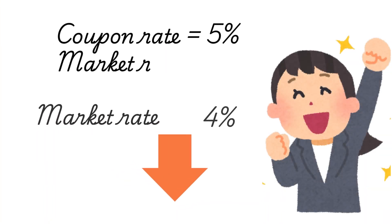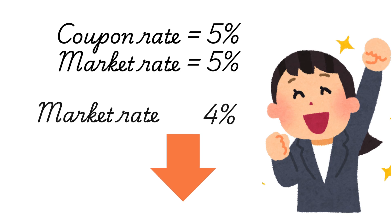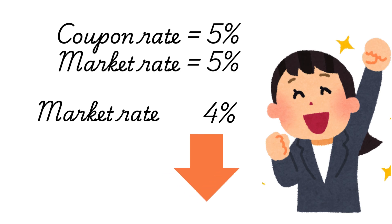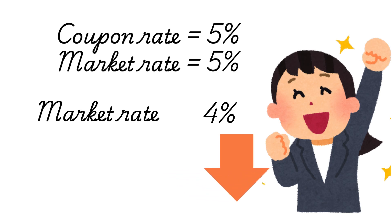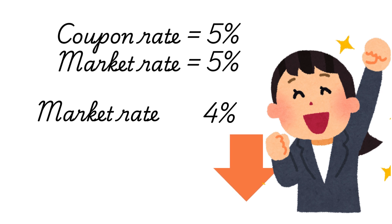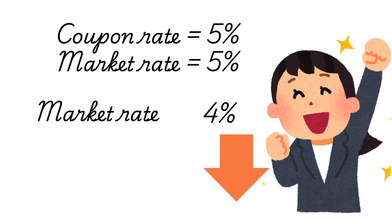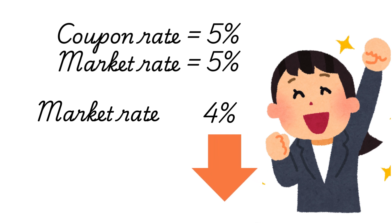If the market rate had fallen to four percent, you might have felt at the top of the world, because while others in the market get a four percent rate for similar investments, you have locked in a five percent rate. If asked to sell this bond, you will either not agree or you will raise the price and charge a premium. So you see that with a fall in the market rate, the bond price rises.